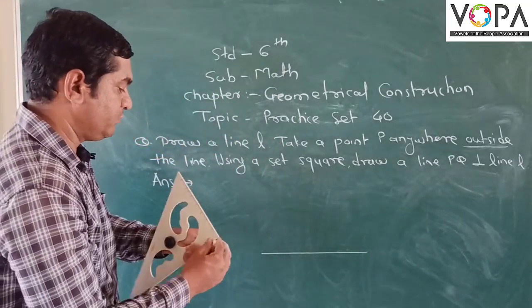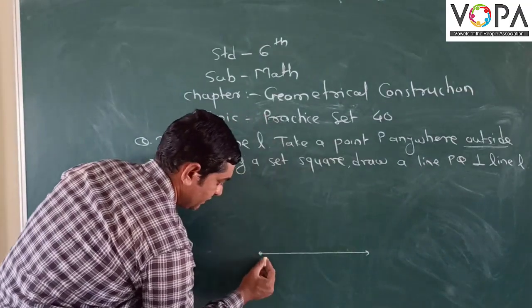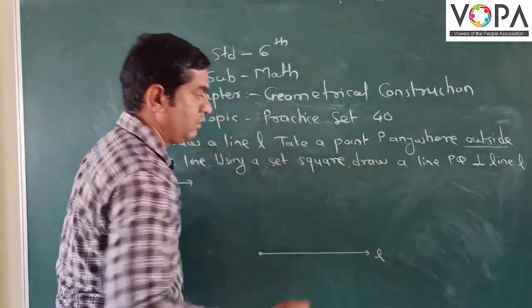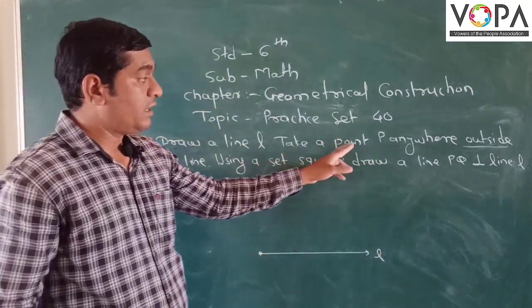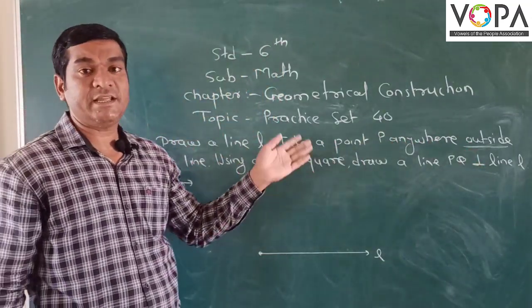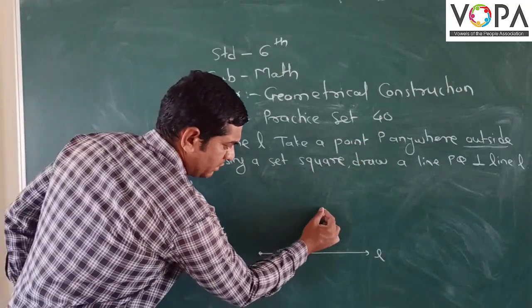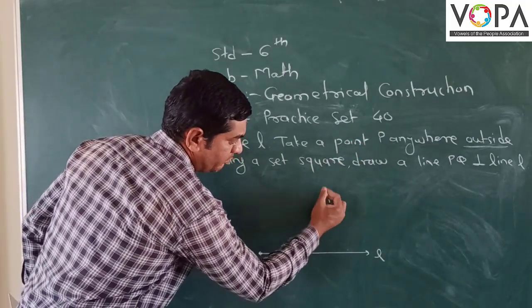Okay. As we draw the line N. And take a point P anywhere outside the line. Outside the line anywhere, we want to take a point P. So here, we take a point P.